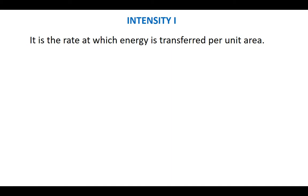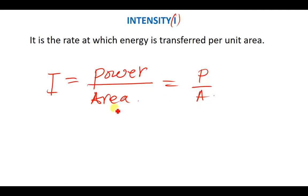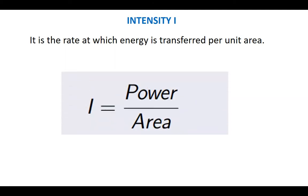Now let's look at intensity. Intensity is simply the rate at which energy is transferred per unit area. It is written using a capital I and is defined as power divided by area: I = P/A. This also means power can be written as P = IA. These are very important formulas to note.